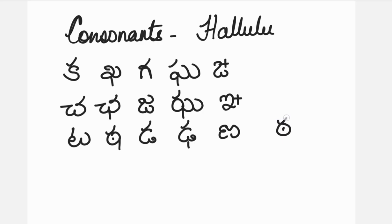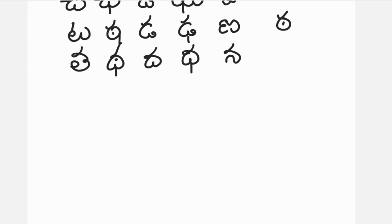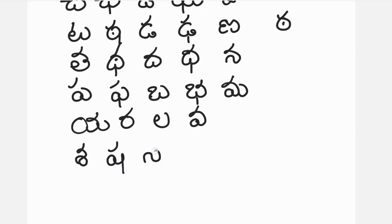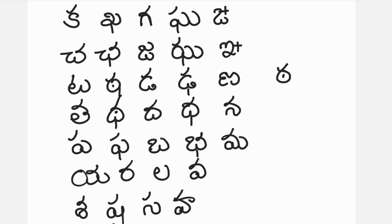Even 'tha' is being written just like this — the standing line is not being given by the side. Ta, tha, tha, da, dha, na. Pa, tha, ba, bha, ma. Ya, ra, la, va. Sa, sha, sa, ha. La, cha. And bandira. These are the consonants.